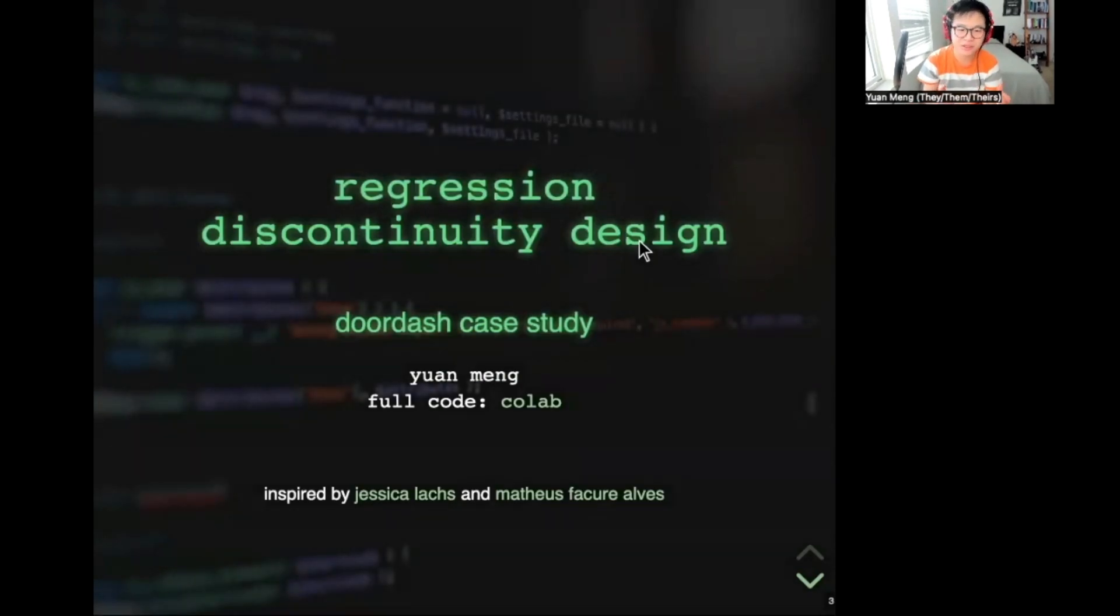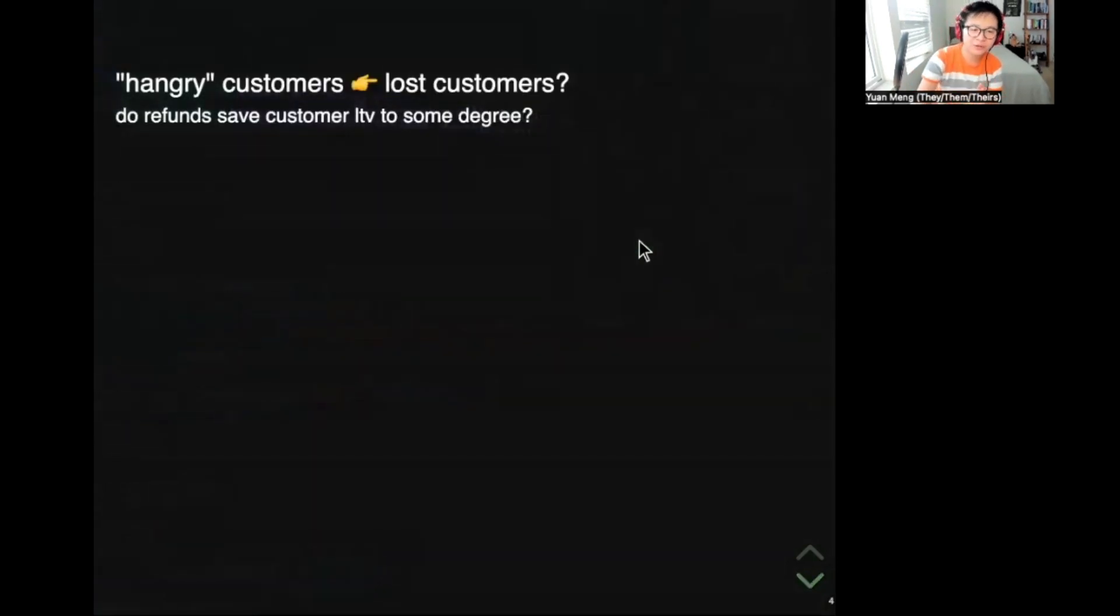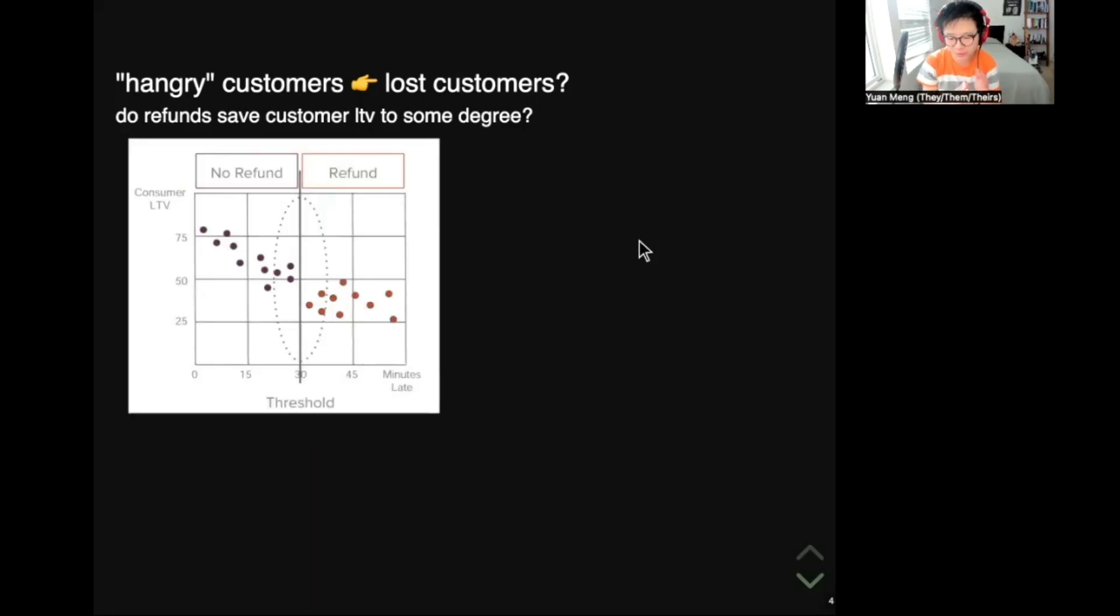We'll take a look at how we can use this method to solve a business problem at DoorDash. For DoorDash, a hungry customer is an angry customer that may never order from the platform again, or maybe just order less in the future. As a result, late orders will have a negative impact on customer lifetime values. What can DoorDash do to make it slightly better for customers receiving late orders? Currently, DoorDash issues a refund to orders that arrive more than 30 minutes late.